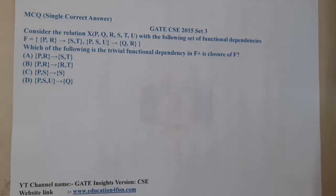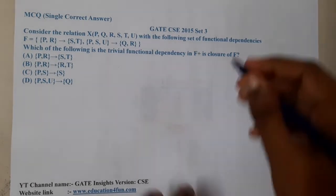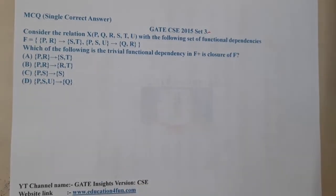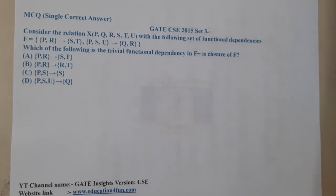Hello guys, we are back with our next lecture. In this lecture, let us go through the next question. This question belongs to GATE CSE 2015 Set 3. The given question is: consider the relation X of P, Q, R, S, T, U, which of the following set of functional dependencies...